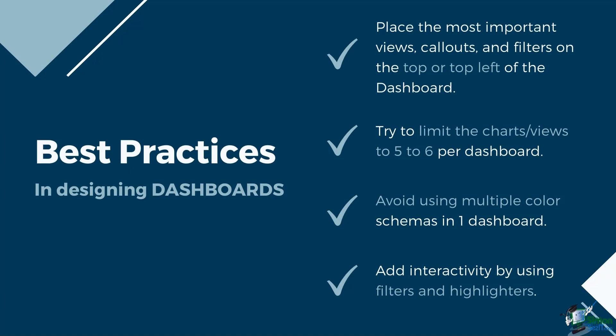Here are some best practices when designing your own dashboard. Place the most important views, callouts, and filters on the top or top left of the dashboard, as these are the spots we see first. Try to limit charts and views to five or six per dashboard — you can always move extra views to another dashboard page. Try to group them based on context or purpose so users can easily understand the goal of each dashboard. Avoid using multiple color schemas in one dashboard; try to use one palette and stick to it to make the dashboard look less cluttered. Add interactivity by using filters and highlighters, as users will most likely focus on a specific part of your data. Adding appropriate and easy-to-use filters will encourage them to explore the data.